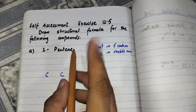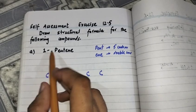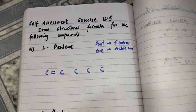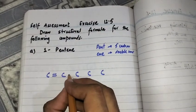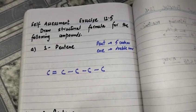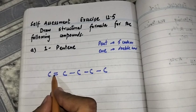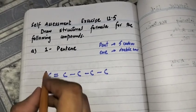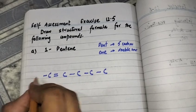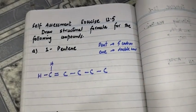There is only one double bond, and its position is represented by the number one, meaning the double bond is attached to the first carbon atom. Remaining bonds are all single bonds. Now we have to complete the valencies. This carbon forms a double bond, so the remaining two bonds will be formed by attaching hydrogen atoms.